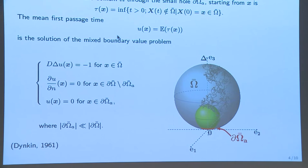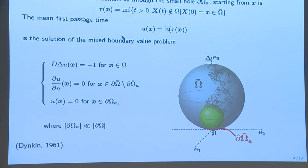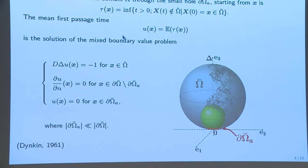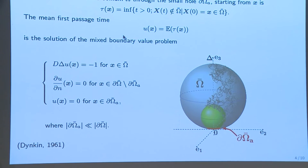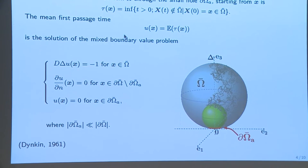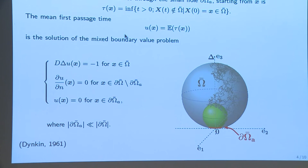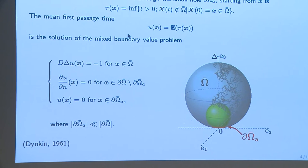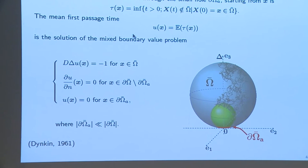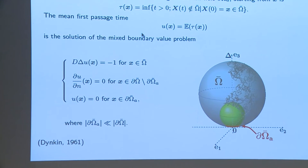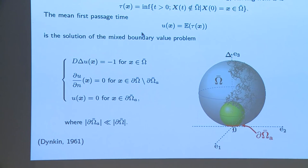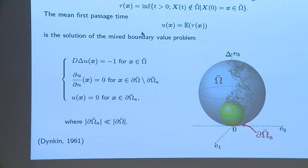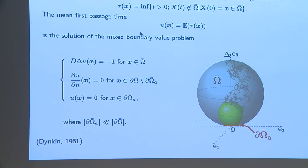We are interested in the mean first passage time to this cylinder, which is u(x). It is well known, by Dynkin, that this mean first passage time follows the solution of a mixed boundary value problem: D times the Laplacian of u equals minus 1, where D is the diffusion coefficient; du/dn equals 0 is classical reflection at the boundaries; and u equals 0 is classical absorption at the red cylinder.